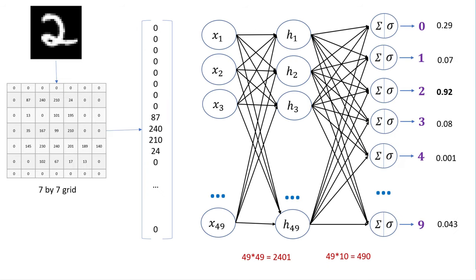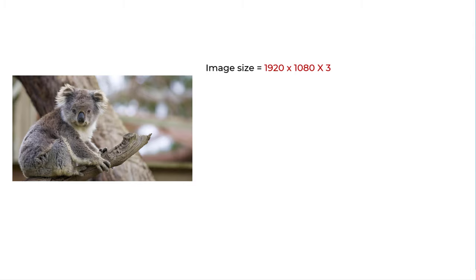In that we created a one-dimensional array by flattening the two-dimensional representation of our handwritten digit number. And then we build a neural network with one hidden layer and output layer. And this dense neural network will work okay for a simple image like handwritten digit. But when you have a bigger image, let's say this little cute looking koala.